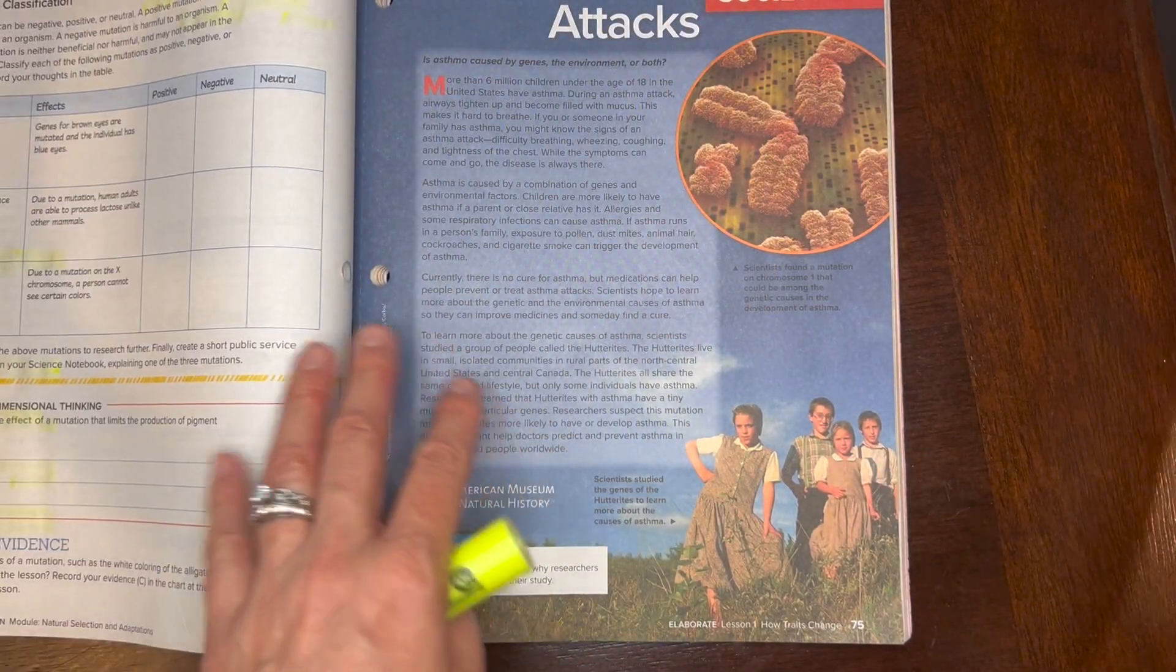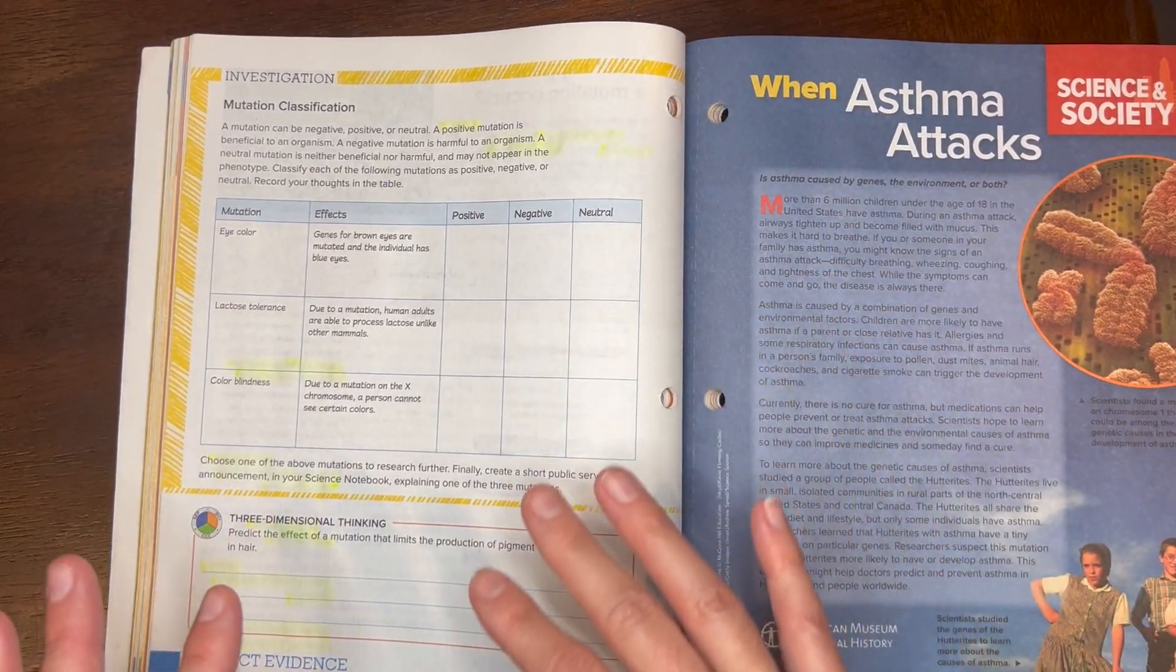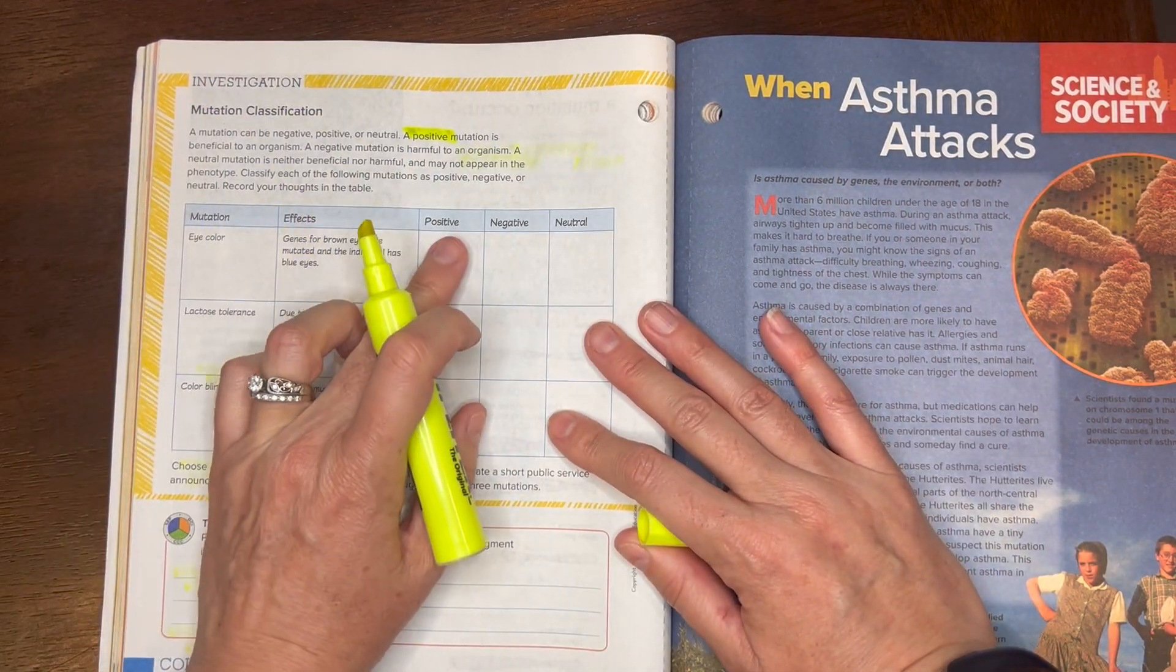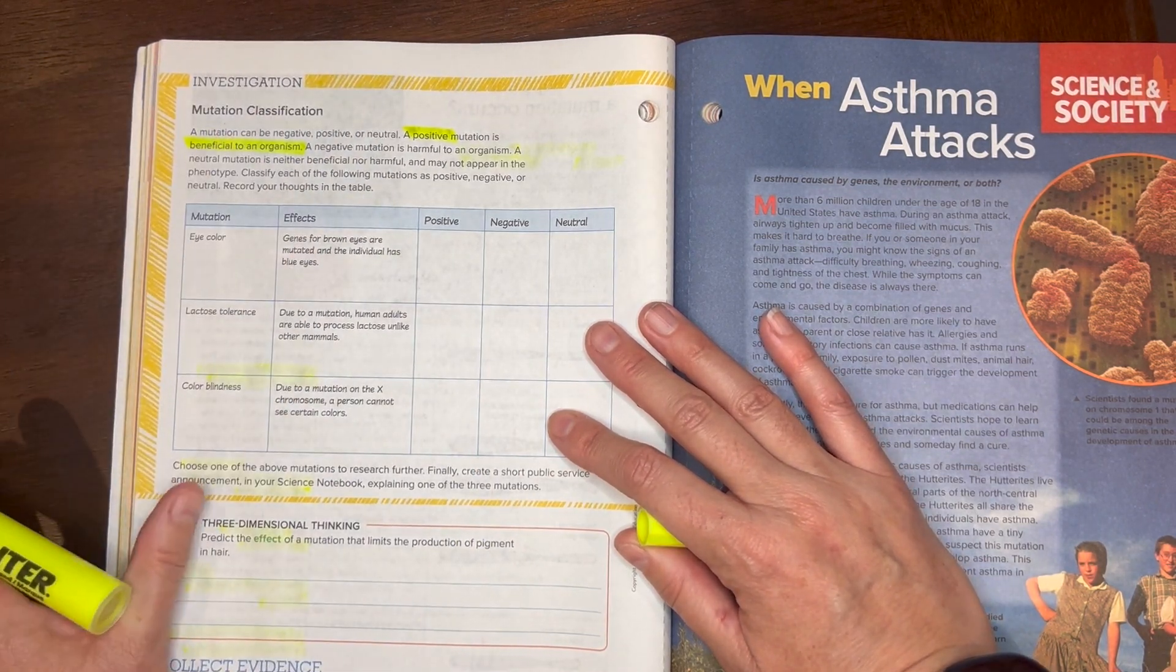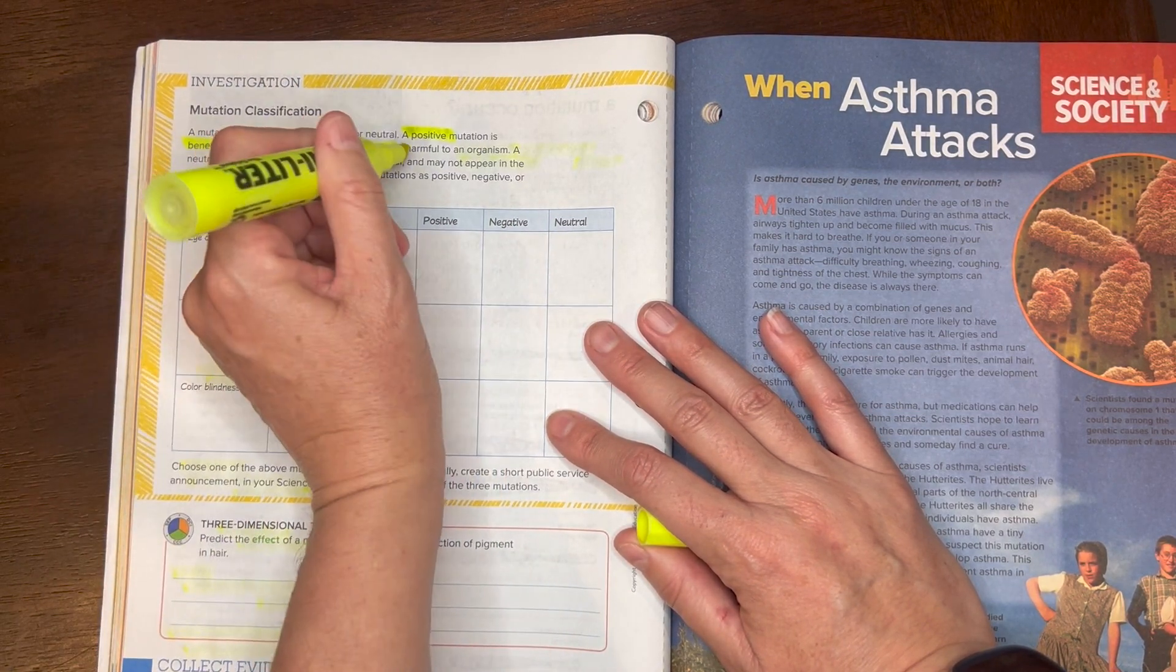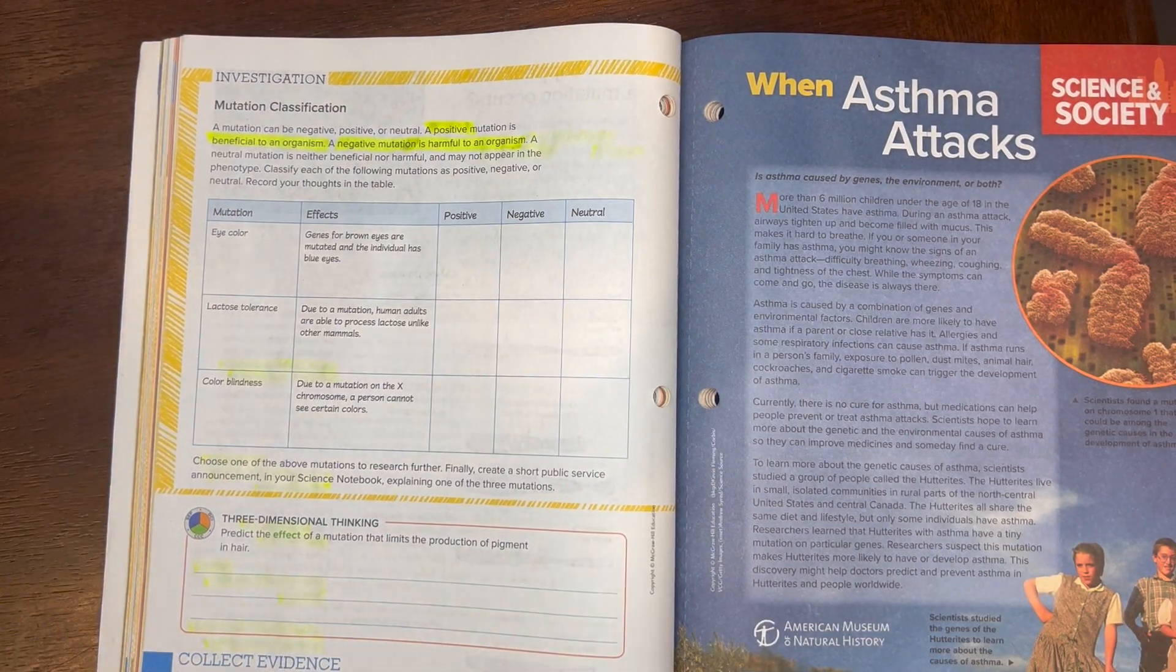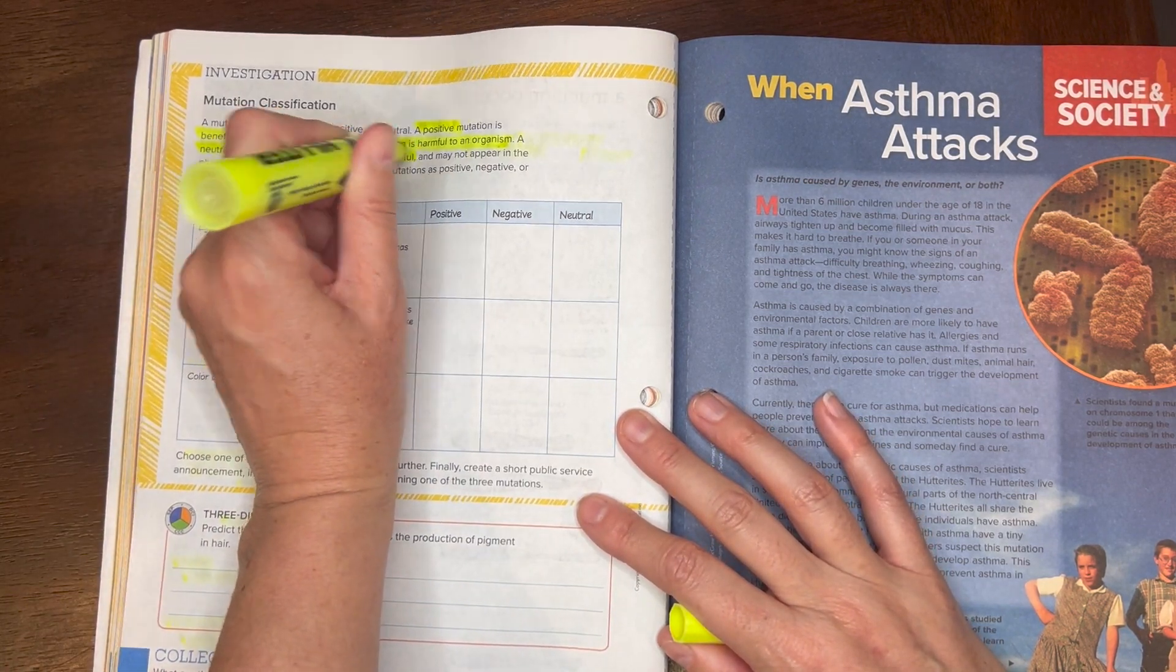All right, let's go ahead and turn the page. Here's an investigation. There's different mutation classifications. We've got positive, and if something is positive it's going to benefit the organism, it's going to help the organism. There's negative mutation and this is going to be harmful, it's going to hurt the organism. And then finally there is a neutral mutation and that's neither harmful or helpful, it's just there, doesn't really do anything for that particular organism.